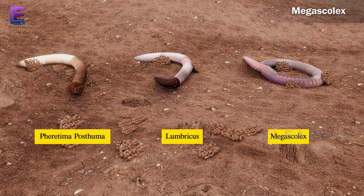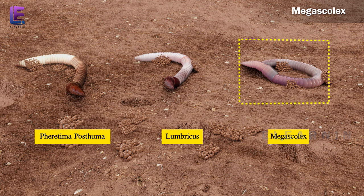Earthworms are considered friends to the farmers. The main types of earthworms found in India are Ferritima, Lumbricus, and Megascolex.